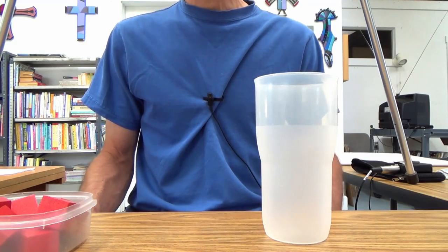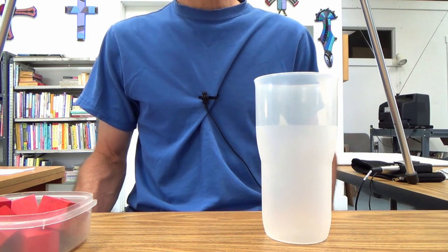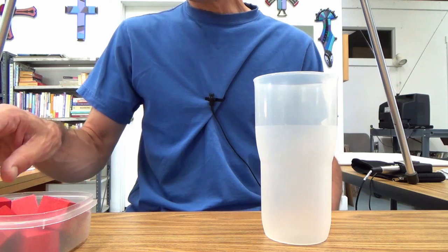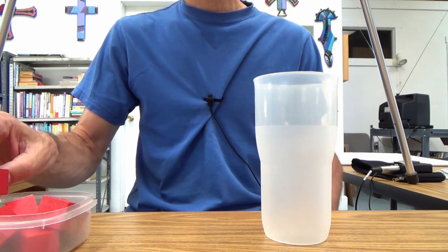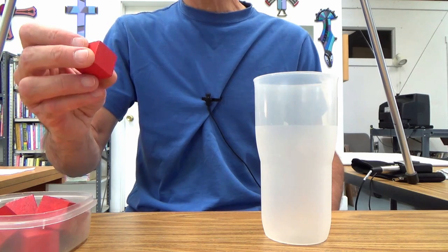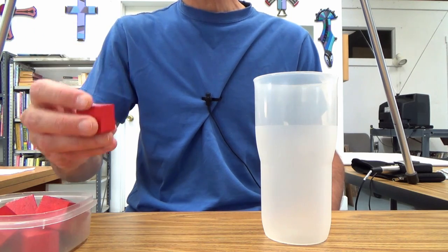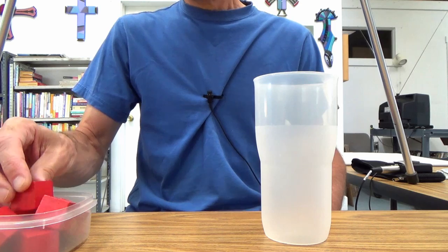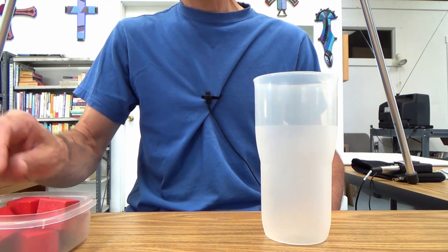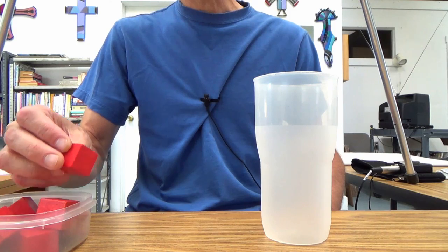Let's measure the height of an object using non-standard units. And the object I chose is this drinking glass. And the non-standard units will be these one inch cubes, wood cubes. And when you're measuring height like this, you need to have something that you can stack. And of course, these fit the bill perfectly.